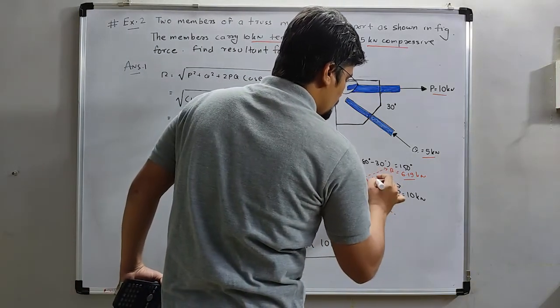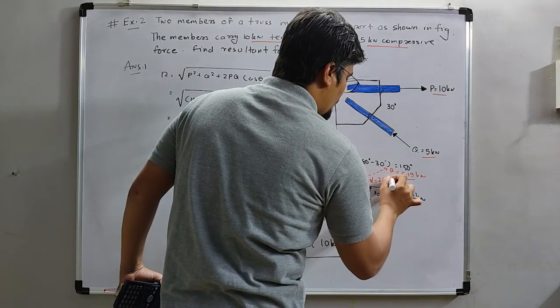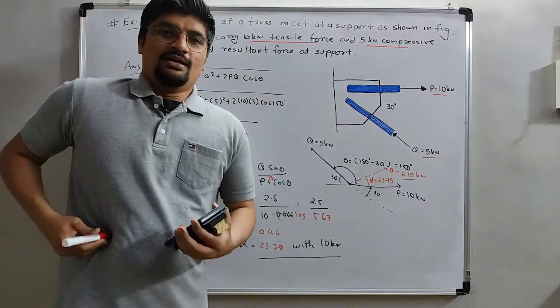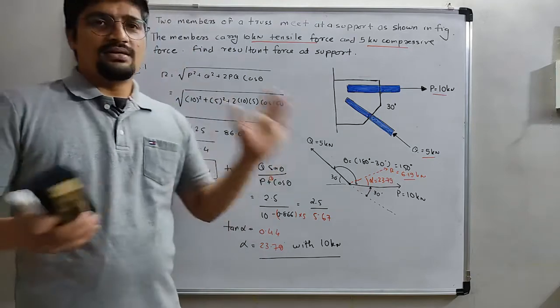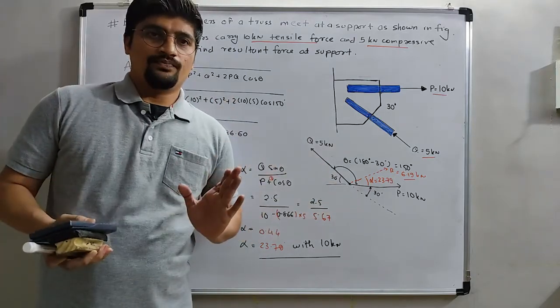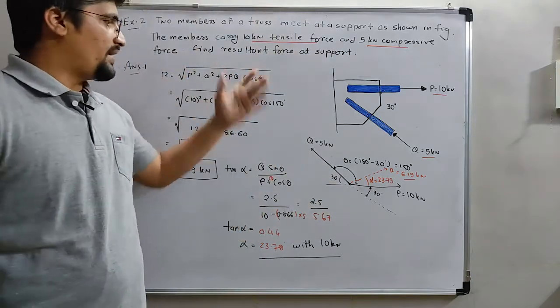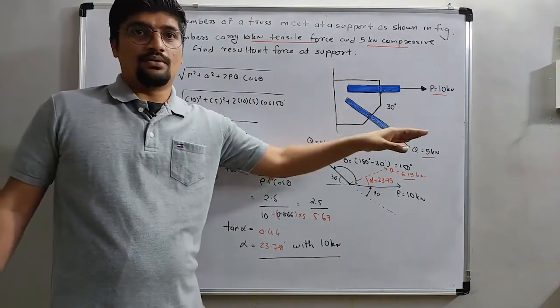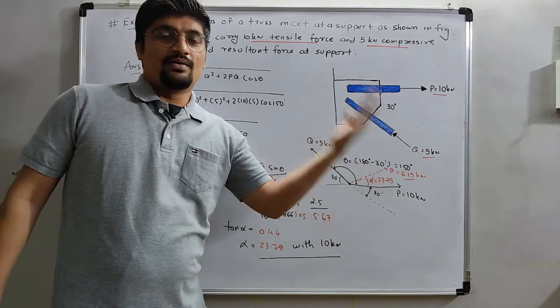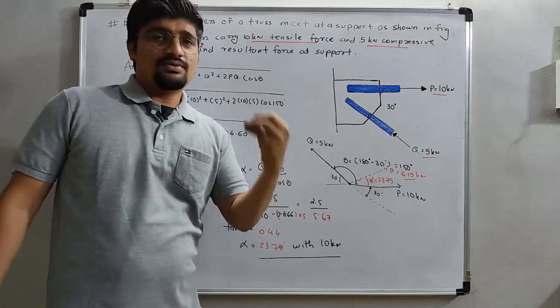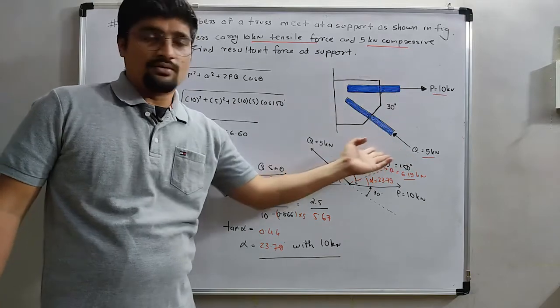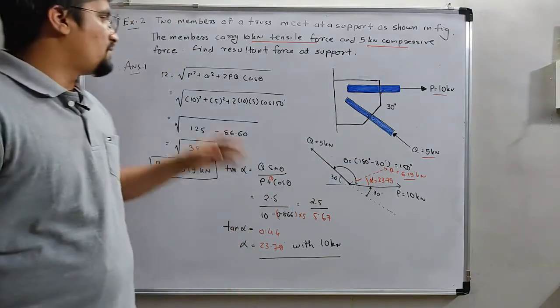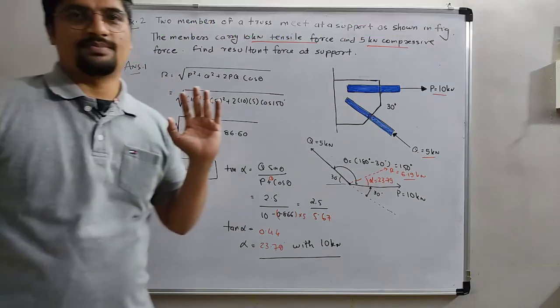The example related to law of parallelogram is like this only. You just need to check whether the force is compressive or tensile, whether to find theta, whether to find P or whether to find Q. But all time you have to use the formula of this and this.